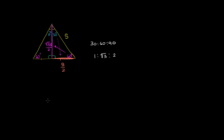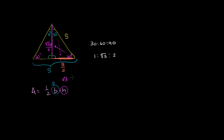So now we just need to figure out the area of this triangle using: area equals 1/2 times the base times the height. The entire base of the triangle is s, and the height is square root of 3 times s over 2. Multiplying that out: in the numerator you get square root of 3 times s squared, and in the denominator we have 2 times 2, so all of that over 4. So for example, if you have an equilateral triangle where each of the sides is 1, then its area would be square root of 3 over 4.